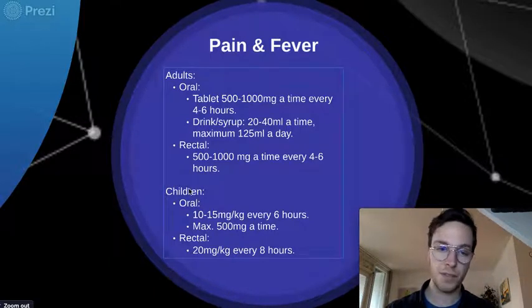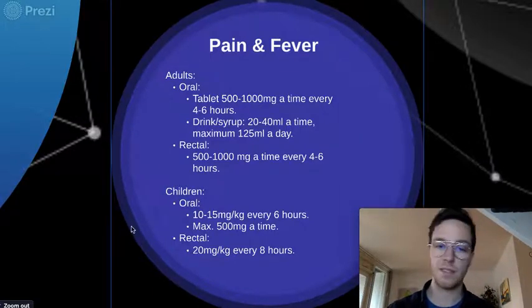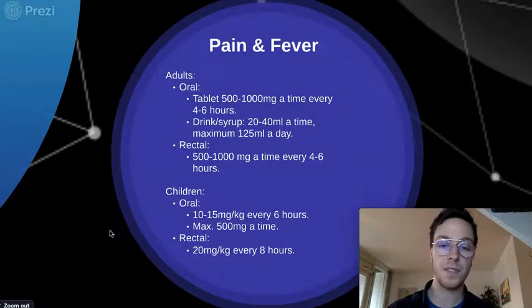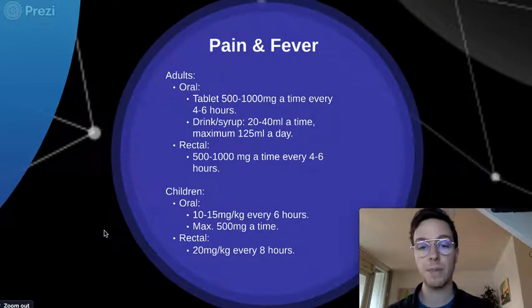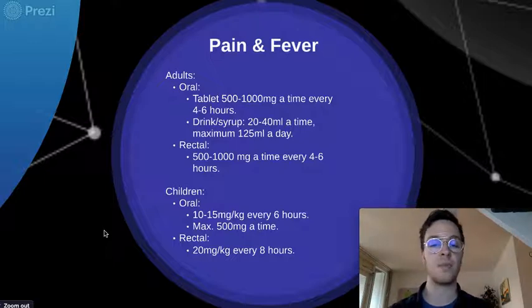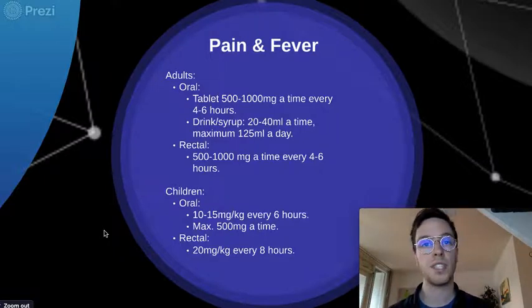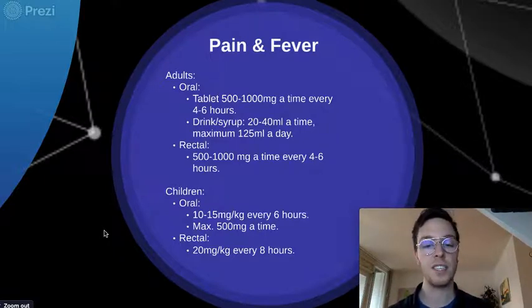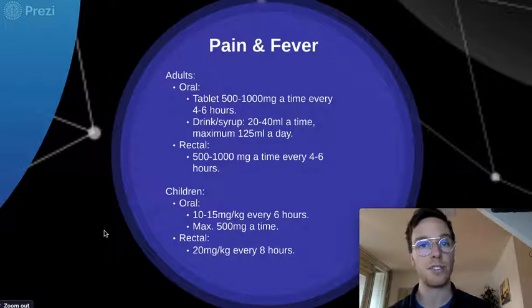For children, orally you can use 10 to 15 milligrams per kilogram every 6 hours, to a maximum of 500 milligrams at a time. Rectally, 20 milligrams per kilogram every 8 hours can be used.